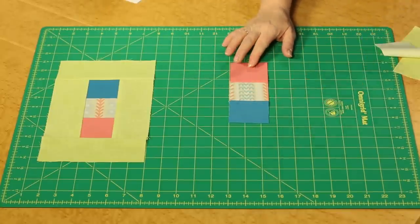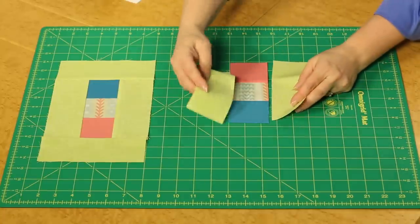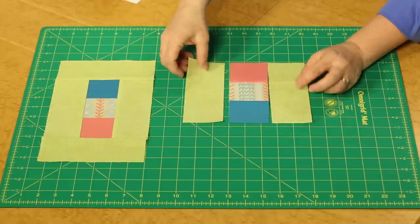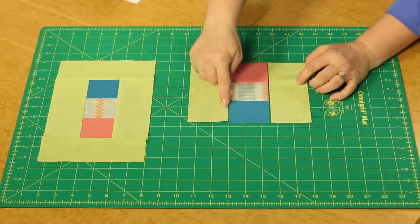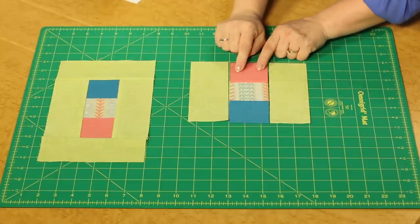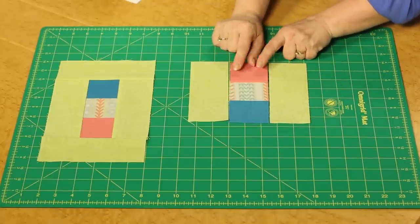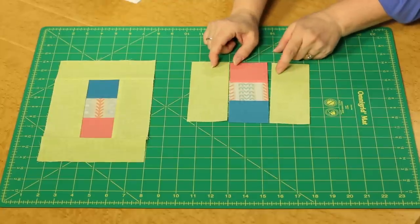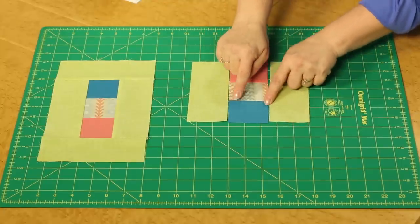Once you have this assembled, then you're going to come in and put a rectangle on each side, seaming here and here, and then pressing seam allowances towards the rectangle because there would be less stress on it turned towards the rectangle because of the seams here.